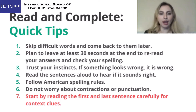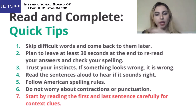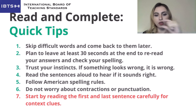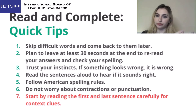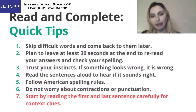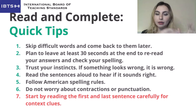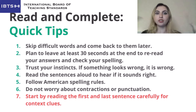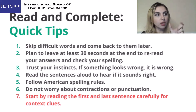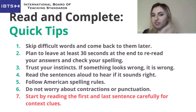'Read and Complete' is a paragraph with missing words — some letters are provided and some are missing, and you are scored on every correct letter. If you encounter a difficult word, leave it for later — don't waste time on one word. Focus on the first and last sentence: the first sentence in any paragraph is the topic sentence, which is general but helps you understand what the passage is about.